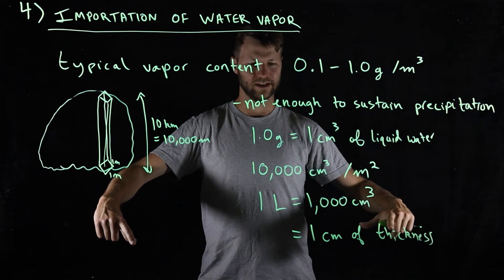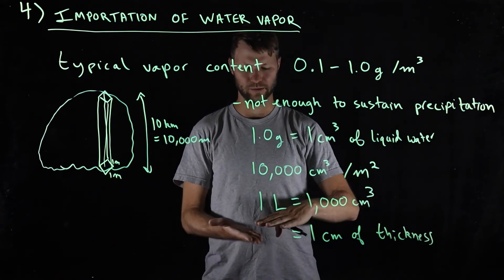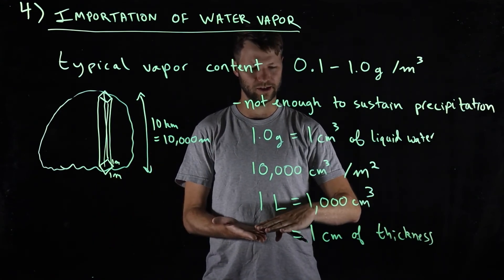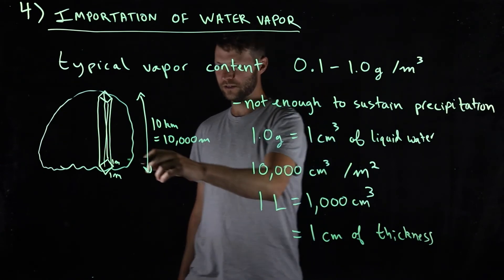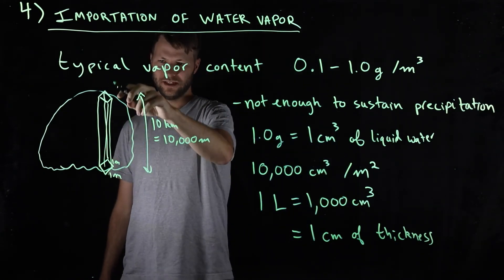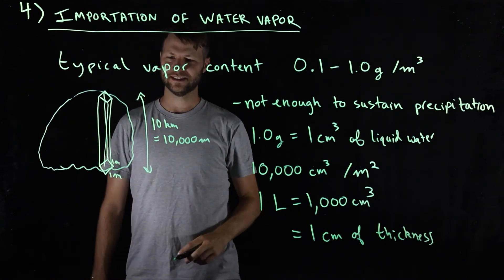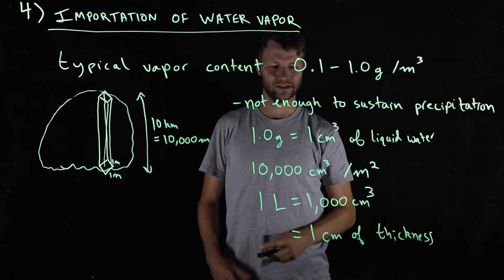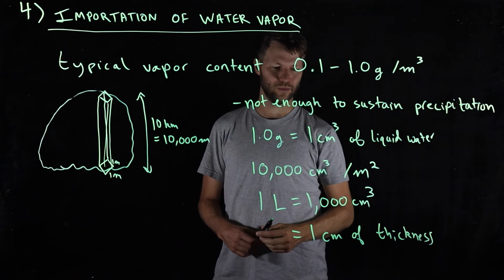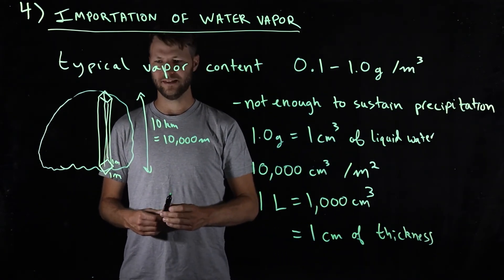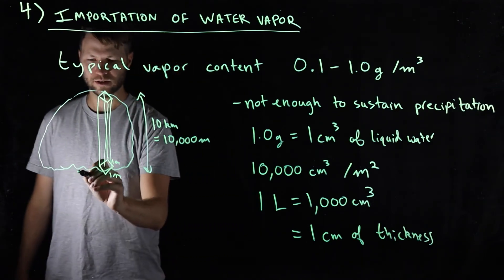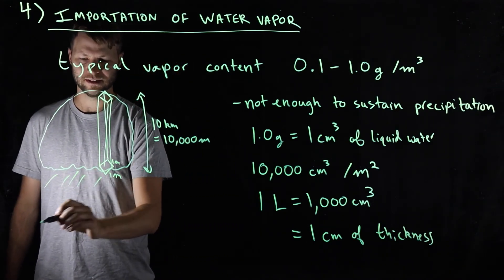One liter spread over a square meter is equal to 1 millimeter of liquid water. 10 liters is a centimeter. So if you were to rain out the water vapor in this entire giant cloud column, you'd only get a storm of about 1 centimeter, and yet we know that in many places it rains in a day much more than that.